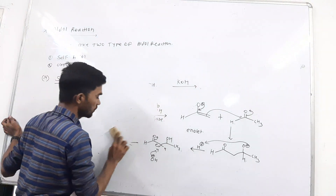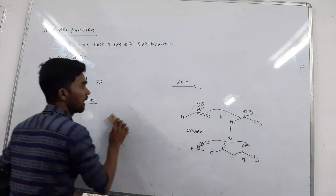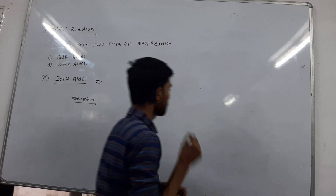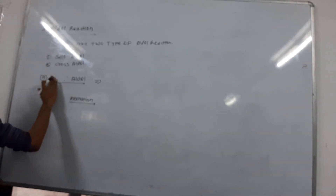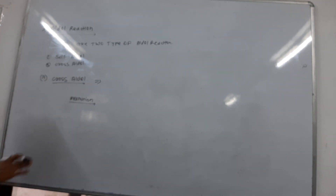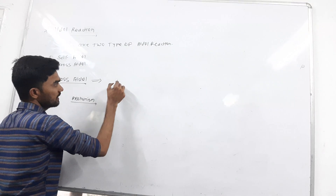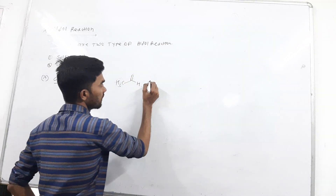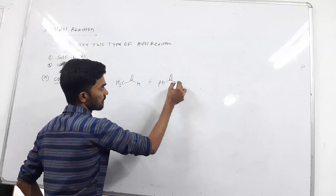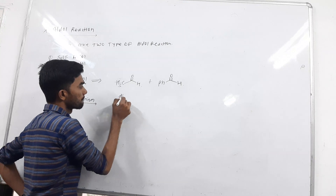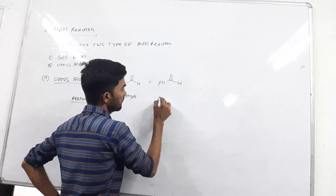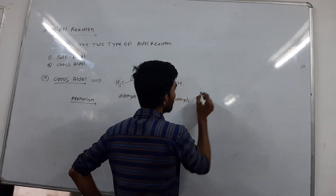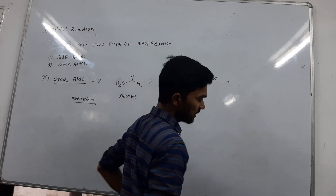Cross-aldol reaction means two molecules are present in the starting material. Two molecules means one is an aldehyde and the second is benzaldehyde, ketones, etc. Cross-aldol requires two molecules: one is aldehyde and second is phenyl aldehyde. A base is most required — any base, any OH, KOH.